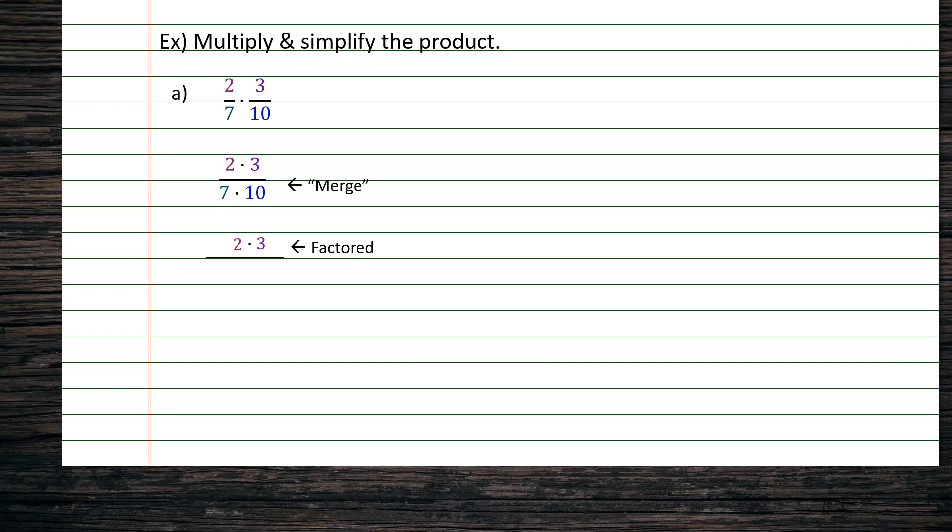Now, we turn our attention to the denominator. In the denominator, we have 7 times 10. Well, the first value, 7, can that factor or is it prime? Well, remember, 7 is a prime number. Next, we look at 10. Is 10 prime? No, 10 can factor, giving us the factors of 2 times 5.